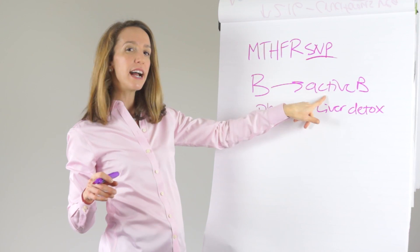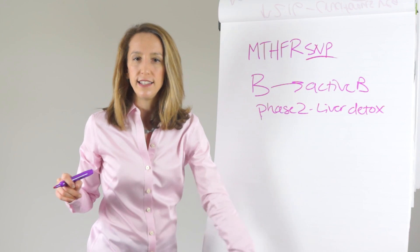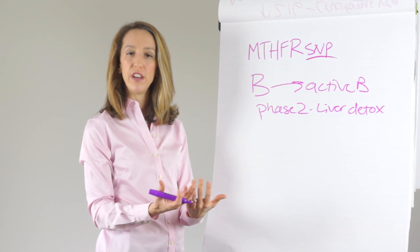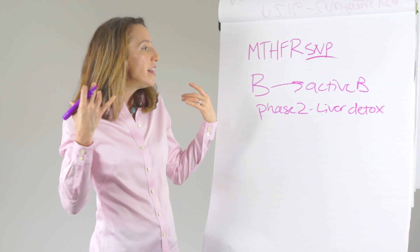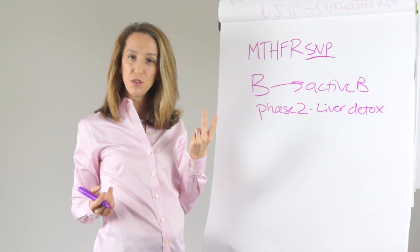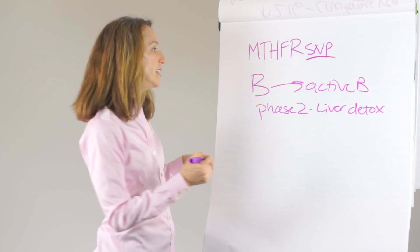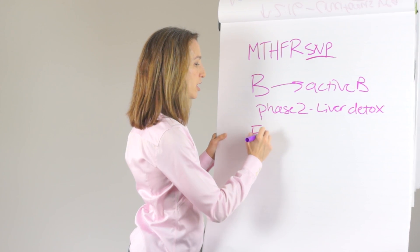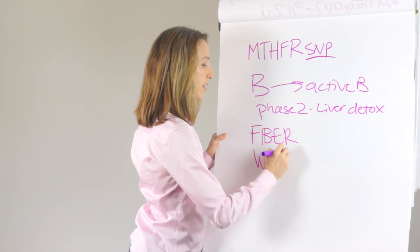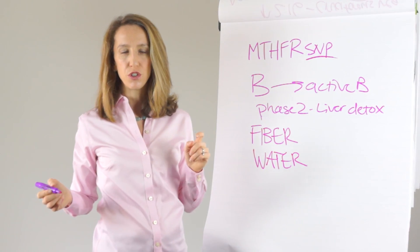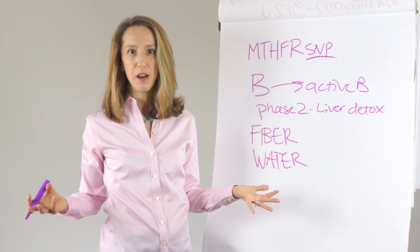If your clients are not completely detoxing estrogen, maybe they get through phase 1 and the metabolites are looking pretty good, but then they're not getting them all the way out. You need to add active B vitamins. And the other two key things for getting stuff all the way out - don't forget, you got to go through the colon and the kidneys. So we need lots of fiber and we need lots of water.